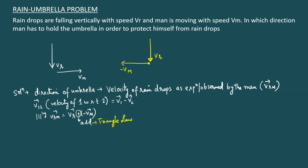Using triangle law: vr and minus vm are represented by adjacent sides of a triangle taken in the same order, and their resultant — the addition — is represented by the third side taken in the opposite order. So vr + (−vm) = vr − vm = vrm. As seen by the man, the raindrops will not be falling vertically; they will be falling in this diagonal direction, and he must hold the umbrella in that direction.